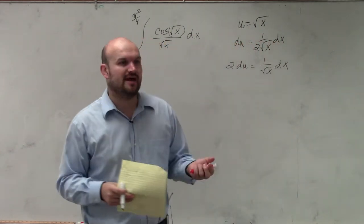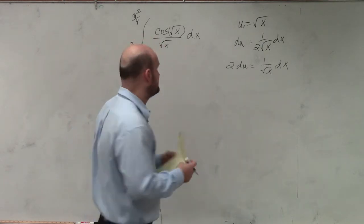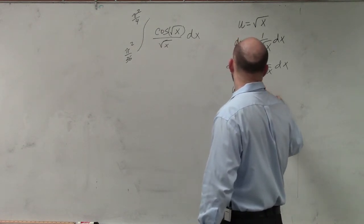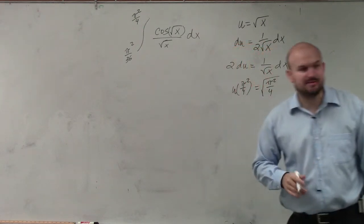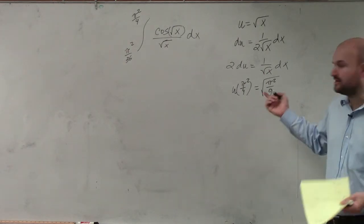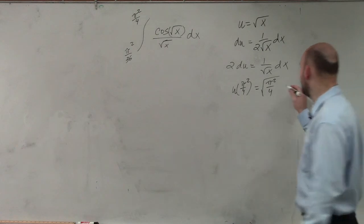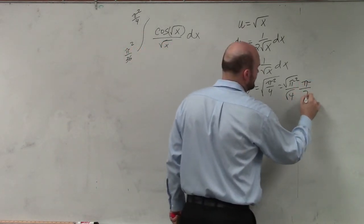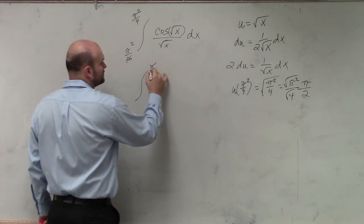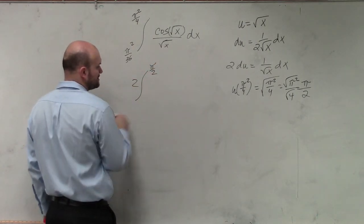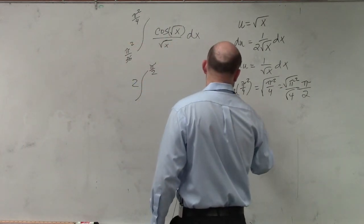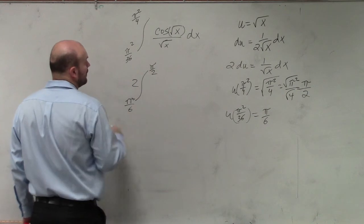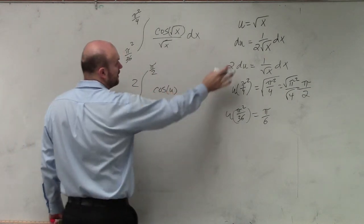Now I'd like to go ahead and evaluate the upper and lower endpoints. What I'm trying to get is u squared divided by 4. We take the square root of pi squared over the square root of 4. The square root of pi squared is just pi, and the square root of 4 is 2, so we have pi over 2. Then u of pi squared over 36 gives us pi over 6.